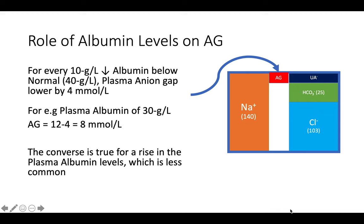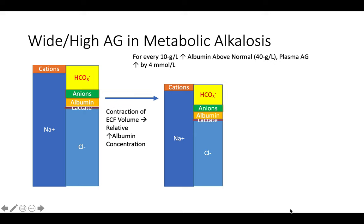When albumin is reduced, the anion gap is also reduced. For every 10 grams of albumin drop below normal plasma level, the anion gap is lowered by 4 mmol/L. So low albumin leads to a lower anion gap — simple to understand and remember.